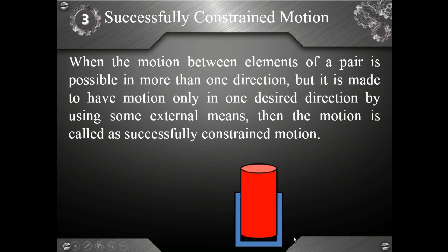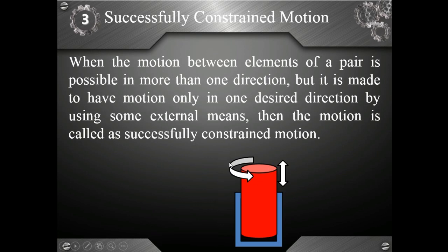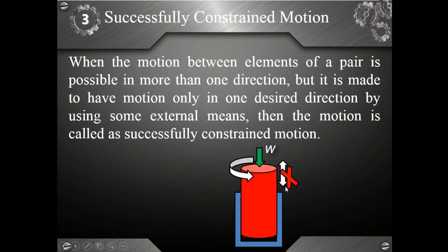As an example, consider a thrust bearing or footstep bearing. This is the bearing surface and this is the journal — that is, the shaft. At this moment, linear motion of the shaft is possible, and at the same time, circular motion (rotation) of the shaft is also permitted — so more than one direction of motion exists. But now, if we apply a load W acting in the vertically downward direction on the shaft, this restricts the linear motion. After application of this load, only rotation of the shaft is possible. This is called successfully constrained motion.